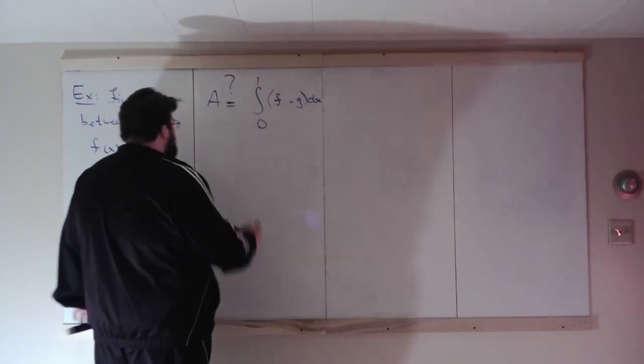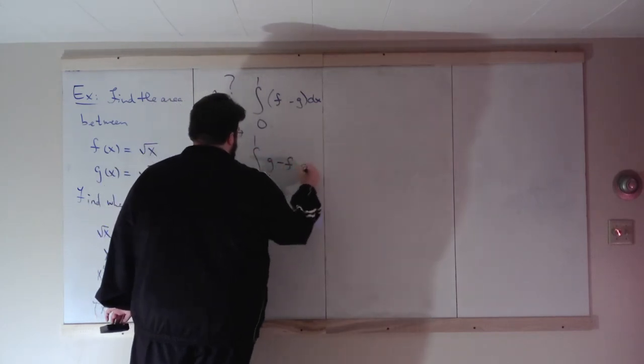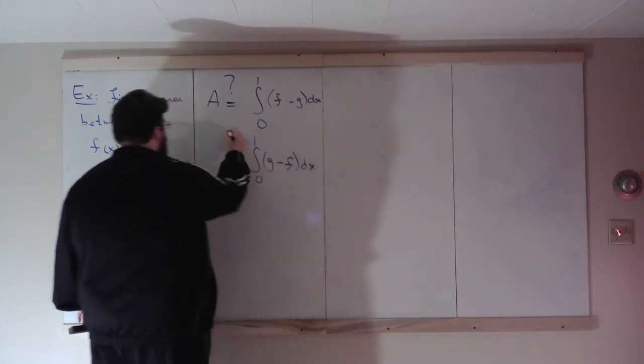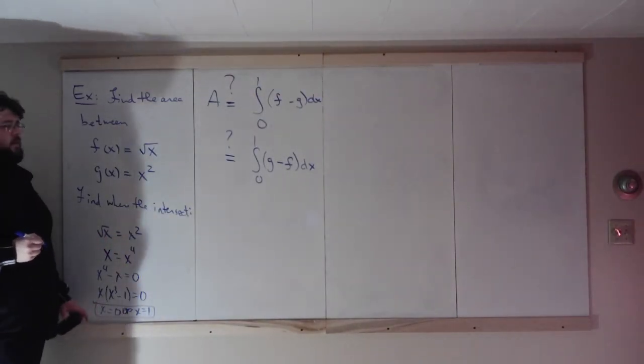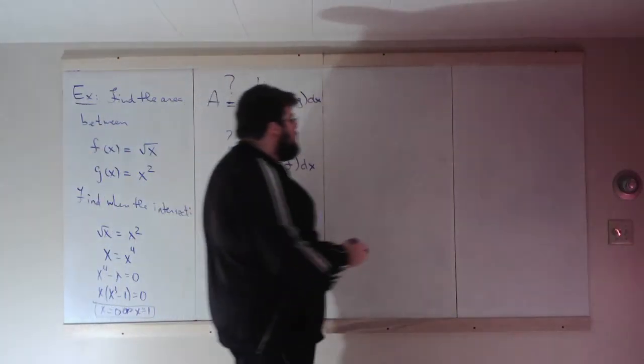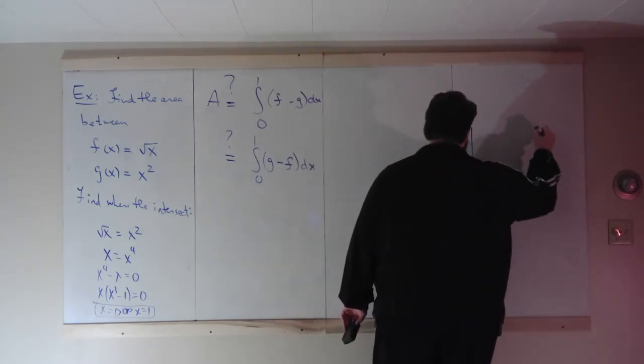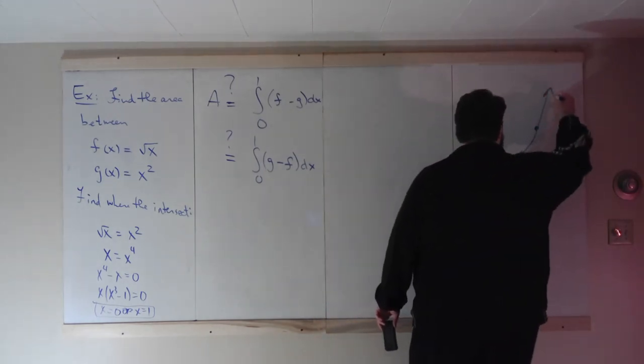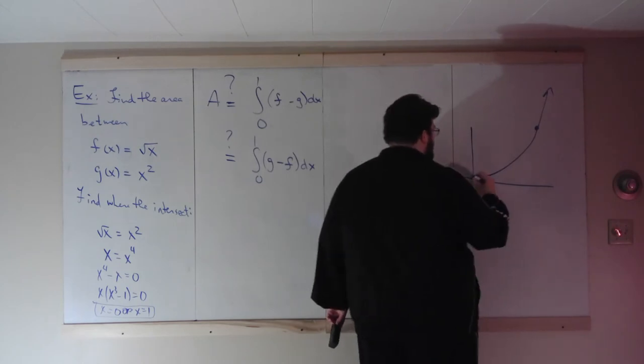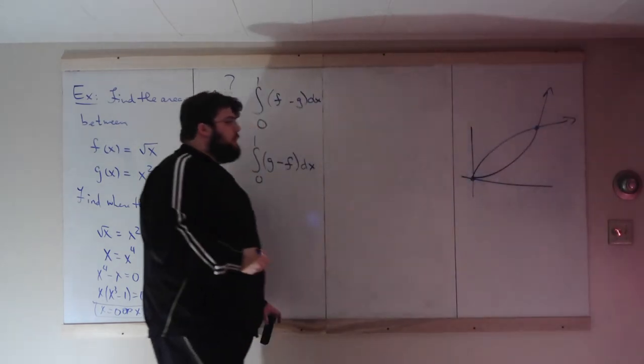So the exact area could be given by one of those two. How would we figure out which function is on top? We know they intersect at 0 and 1, at ordered pairs 0, 0 and 1, 1. We have two functions that go through these points. They're going to look something like this.